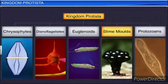To summarize so far: Chrysophyta — examples are diatoms; Dinoflagellata — example is Gonyaulax, causing red tides; Euglenoids — example is Euglena; and Slime Molds — example is plasmodium.